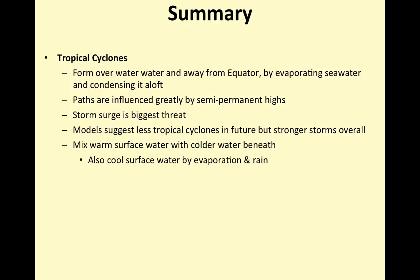Summary from Chapter 8, Storm Climatology on tropical cyclones: they form primarily over big swaths of warm water and away from the equator where there is enough Coriolis force to get them spinning. They evaporate seawater and condense it aloft, giving huge amounts of latent heat of which they use a small percentage to turn into kinetic energy. Paths are influenced greatly by semi-permanent highs over the subtropical basins. Storm surge is the biggest threat and biggest cause of money loss and loss of lives. Models suggest fewer tropical cyclones in the future but stronger storms overall. They do mix warm surface water with colder water beneath, which can be very important in changing sea surface temperatures.